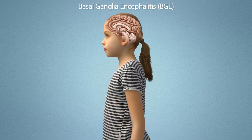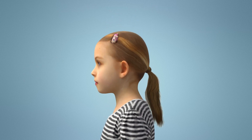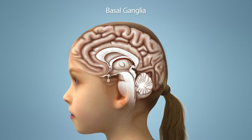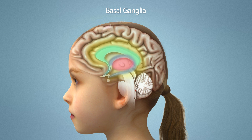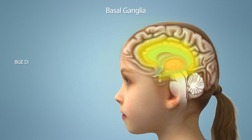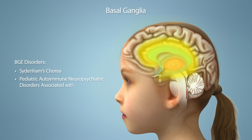Post-infectious basal ganglia encephalitis, or BGE, is a subset of AE that is triggered by infections — either bacterial, viral, or fungal. BGE is characterized by the abrupt onset of movement and/or psychiatric symptoms. The basal ganglia are a group of interconnected structures within the brain associated with regulating motor movement, cognitive and emotional response, and procedural learning. BGE disorders include Sydenham's chorea, pediatric autoimmune neuropsychiatric disorders associated with streptococcal infection, or PANDAS, and pediatric acute onset neuropsychiatric syndrome, or PANS.